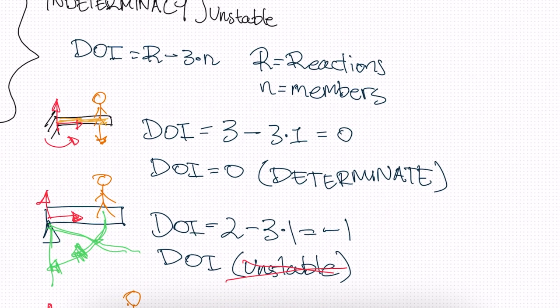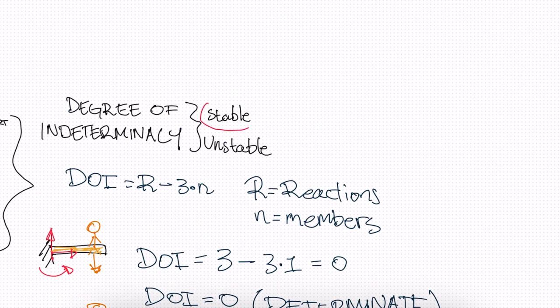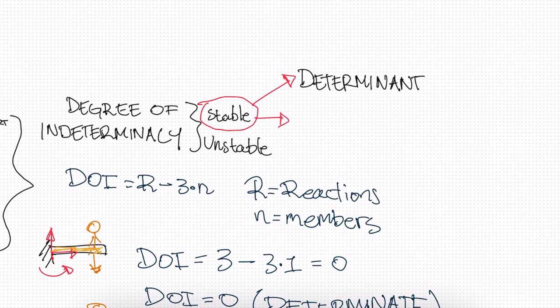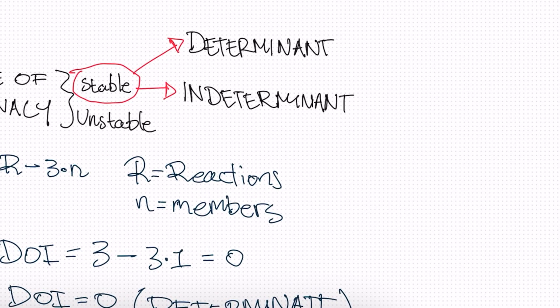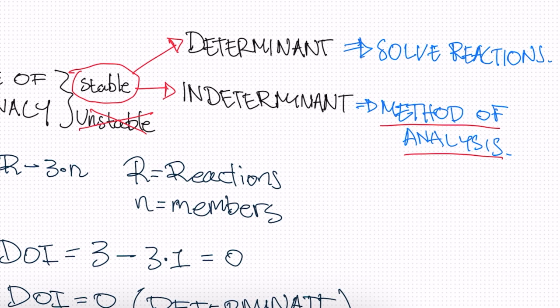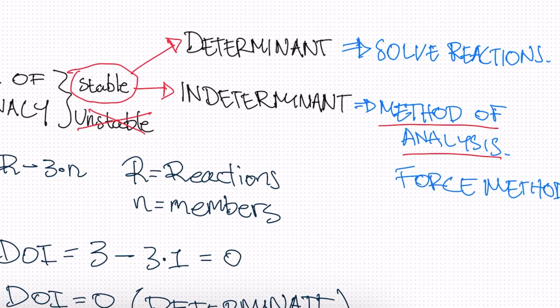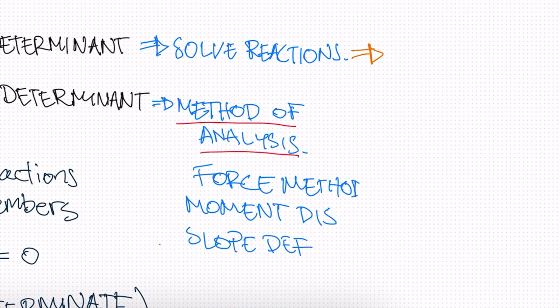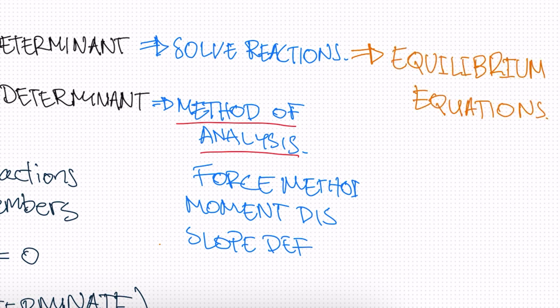So why is it important to understand this? For stable structures, we have determinant and indeterminate. And for unstable, we don't really need to worry about those. So for determinant, we can go ahead and solve reactions. And for the indeterminate beams, we can't solve for reactions, we need to use a method of analysis. So this is a little bit more advanced, and this will be stuff like the force method, moment distribution, slope deflection, and there's more methods. But for our determinant beams, we can use our equilibrium equations. And that's what we're going to look at in the next video.